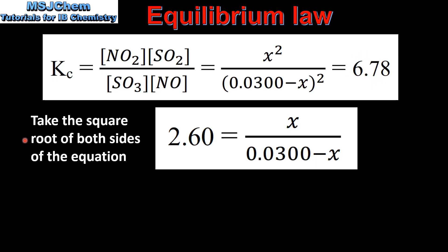Next we take the square root of both sides of the equation, so this gives us 2.60 equals X divided by 0.0300 minus X.